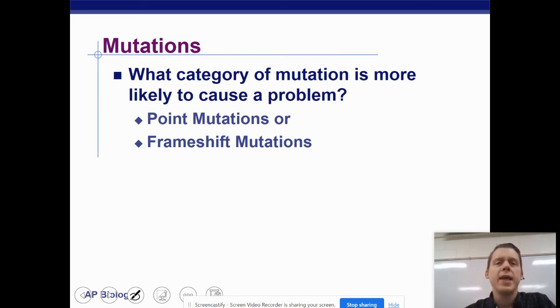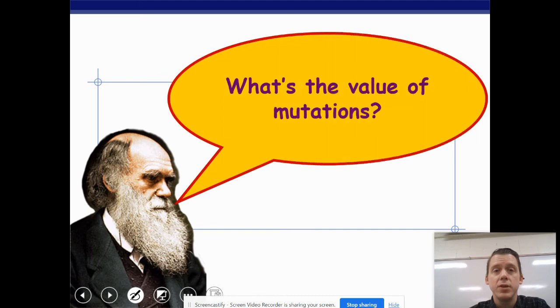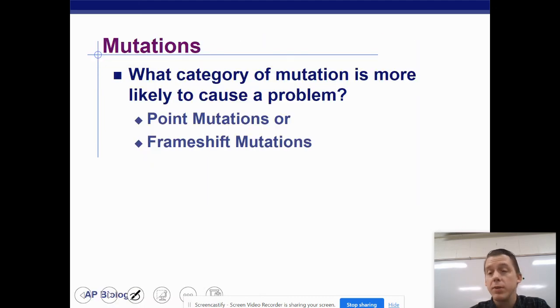Here's a question. What category of mutation is more likely to cause a major problem, a point mutation or a frameshift mutation? Well, we learned that a point mutation changes one amino acid and a frameshift mutation will change all of the amino acids that come after the mutation. So the answer is a frameshift.